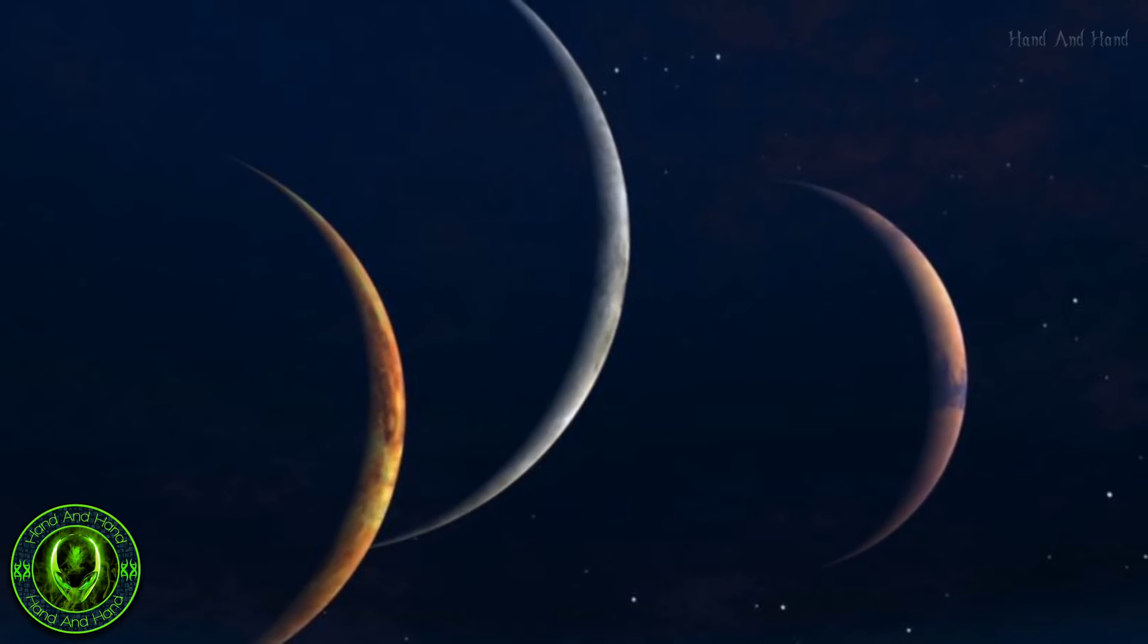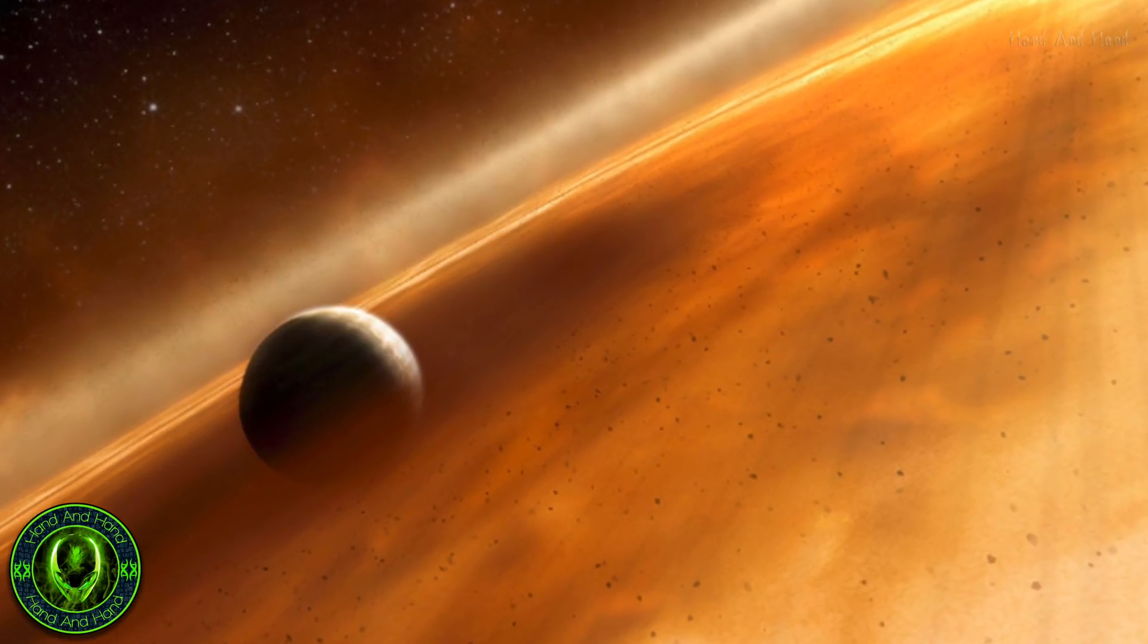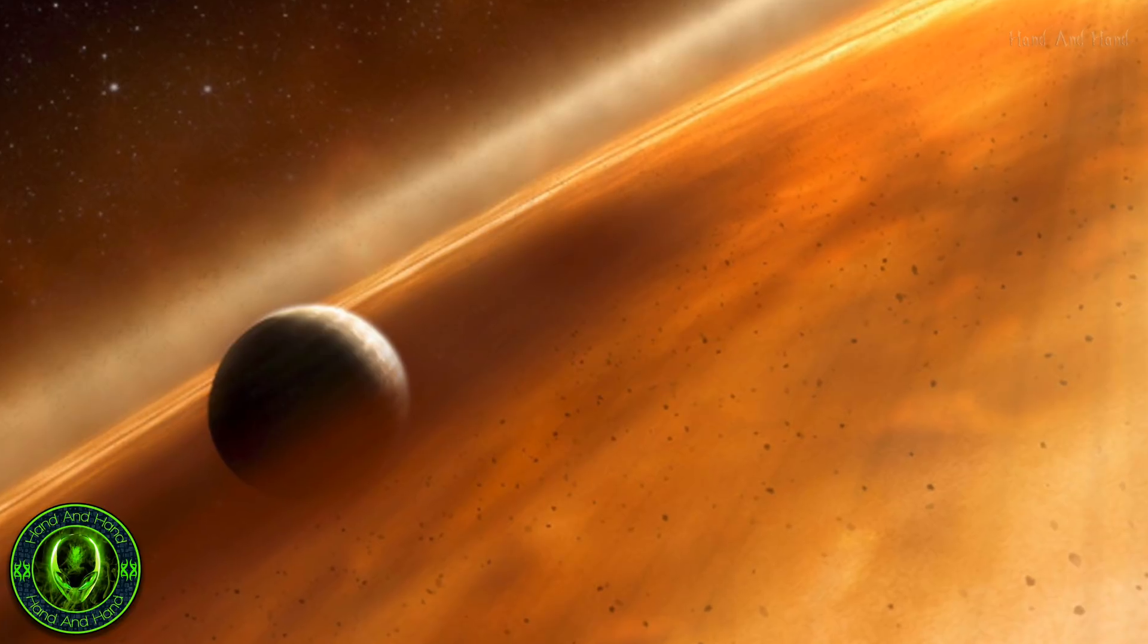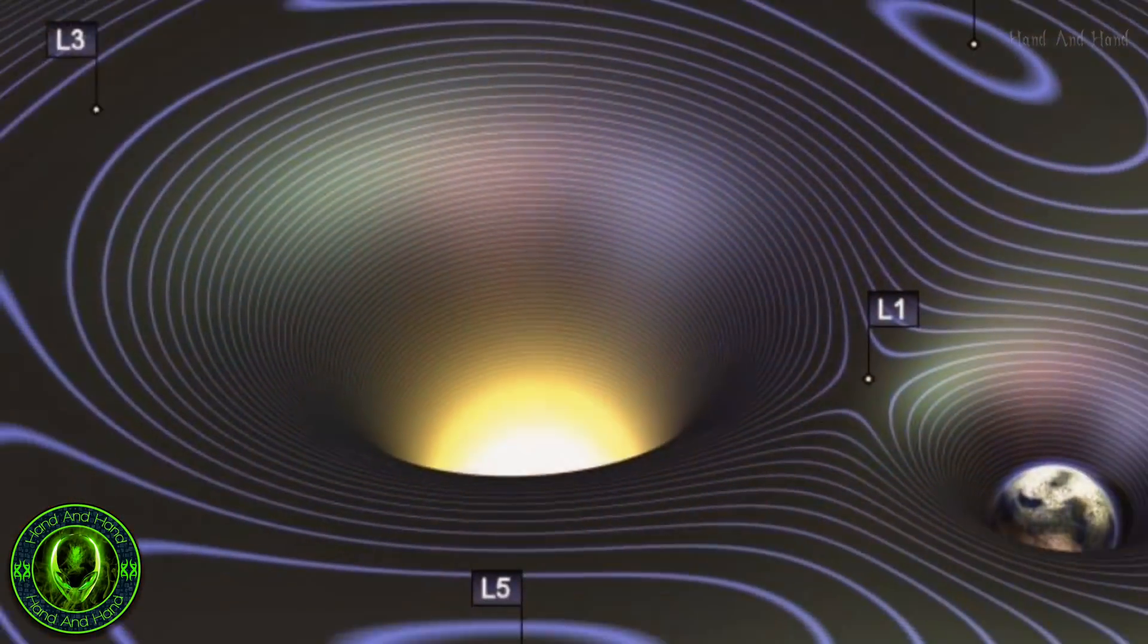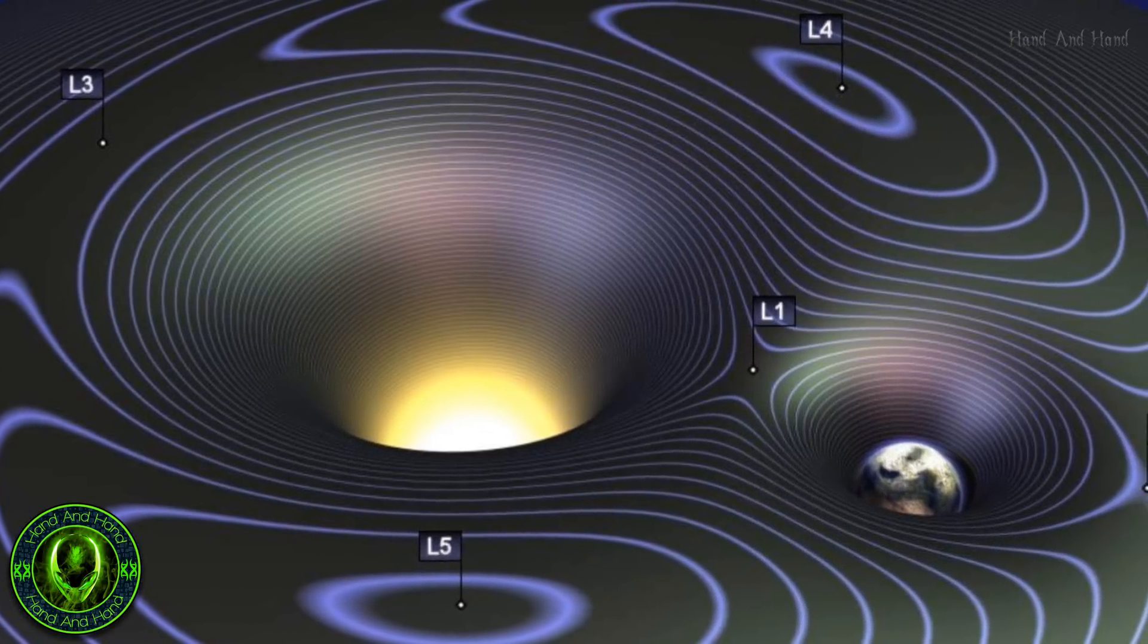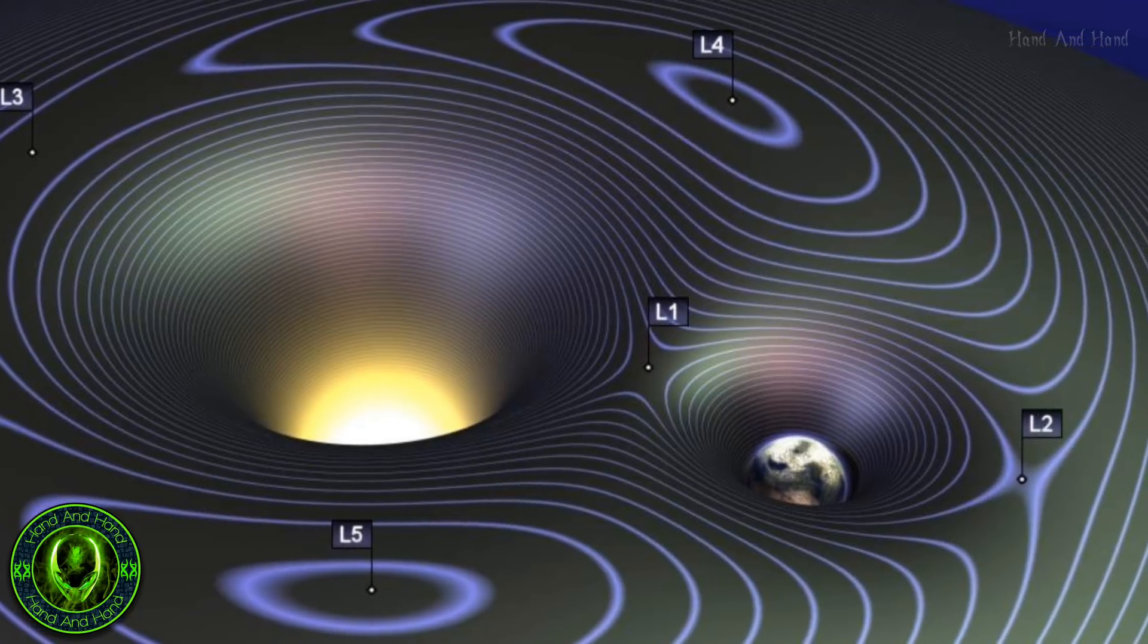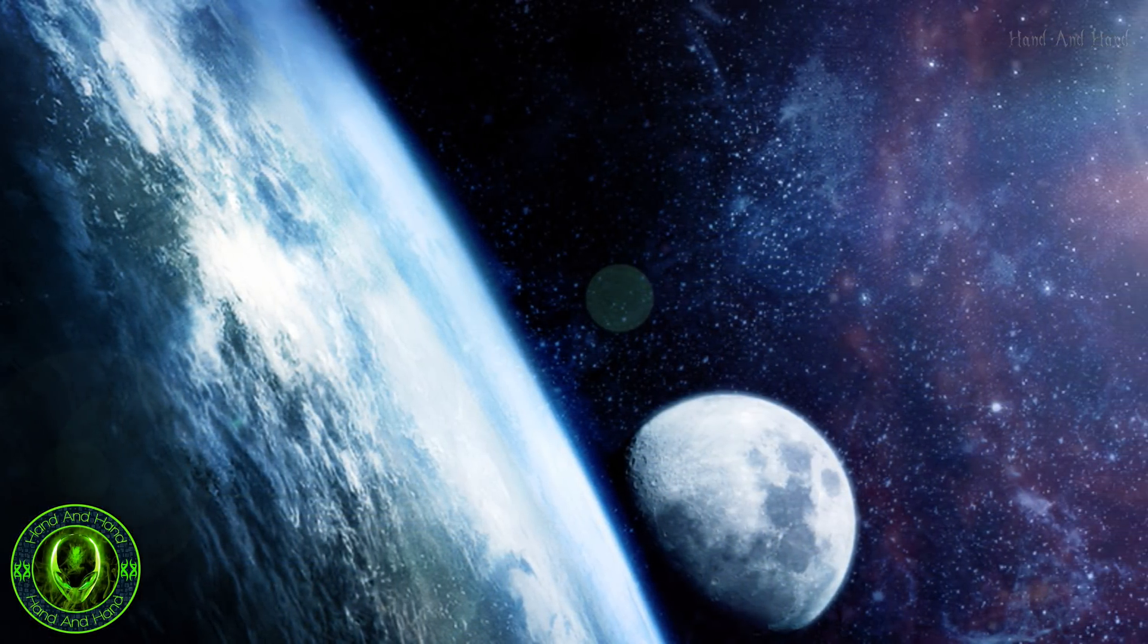There are five specific points of stability in deep space where they figured the moons could be located. These orbital sweet spots, known as Lagrange points, are where the gravitational pull of two orbiting objects such as Earth and the Sun is balanced out by the centripetal force of their orbits. Here, objects remain trapped in relatively stable positions and at constant distances from both the Moon and Earth.